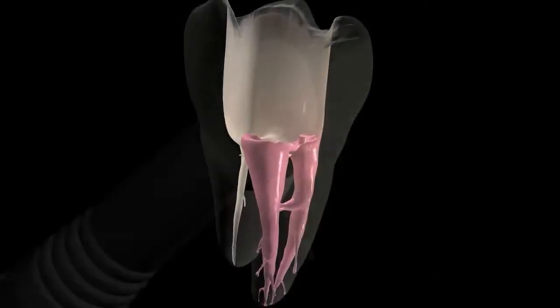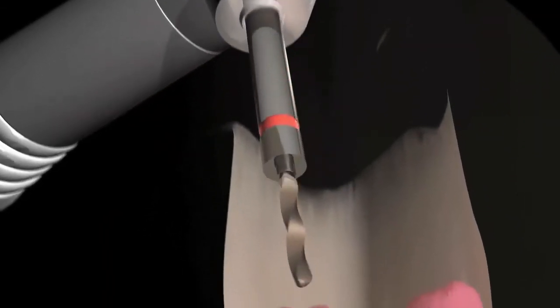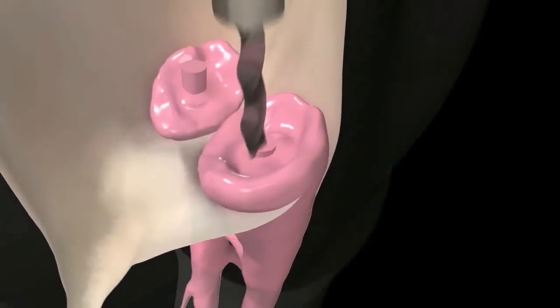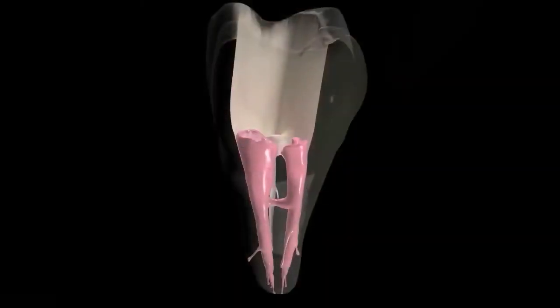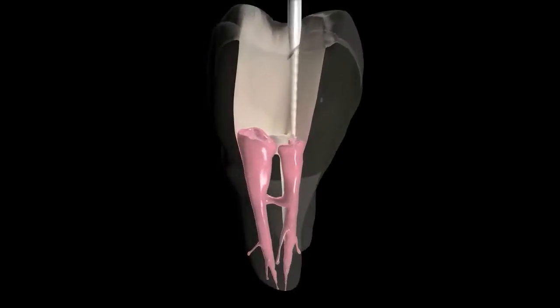Gutta-core obturators remove easily like gutta-percha because they are gutta-percha through and through. You'll see the familiar shredding characteristic, whether you're creating post-space or retreating.